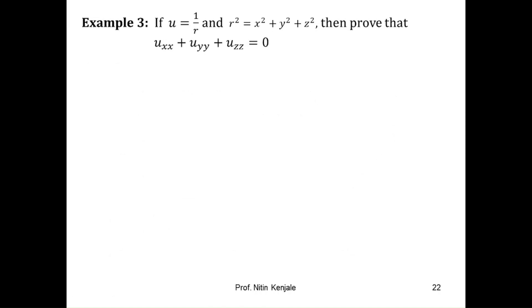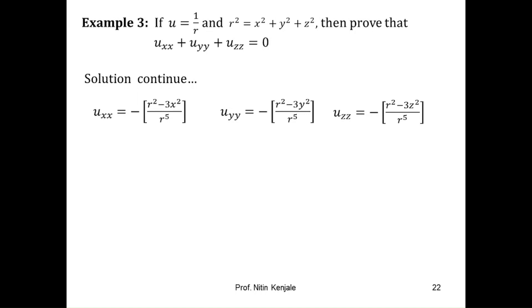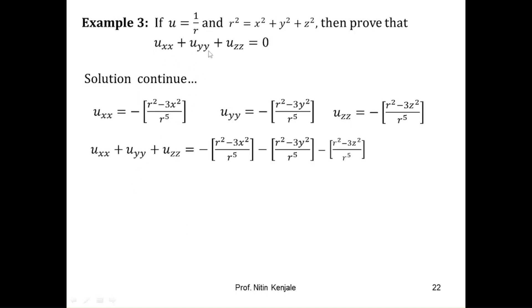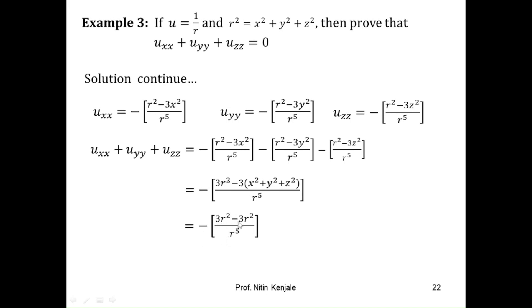Adding the three results: uxx + uyy + uzz = (−1/r⁵)[3r² − 3(x² + y² + z²)]. Since x² + y² + z² = r², the numerator becomes 3r² − 3r² = 0. Therefore 0/r⁵ = 0, so uxx + uyy + uzz = 0. Hence proved. I hope you understood what is a function of a function and how to differentiate it.